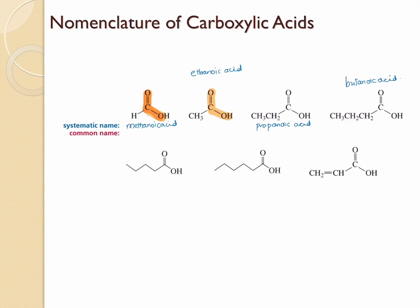The next set of compounds: here there are totally five carbons — one, two, three, four, five — so therefore this should be pentanoic acid. And this one should be hexanoic acid.